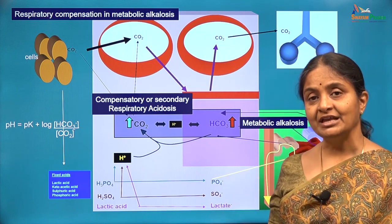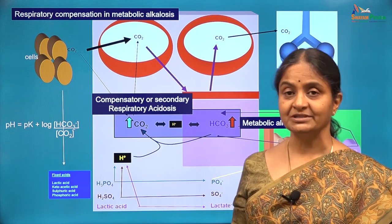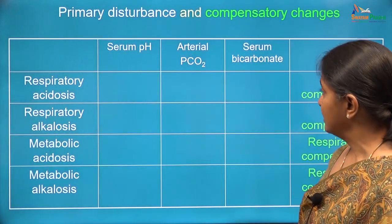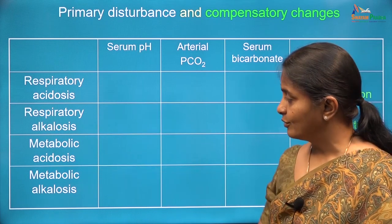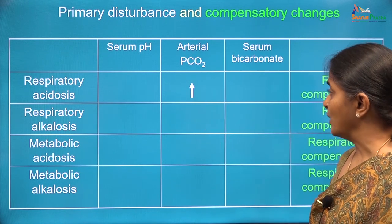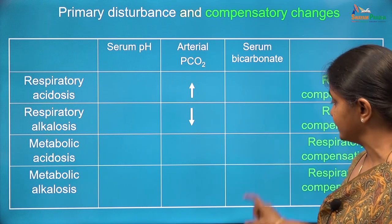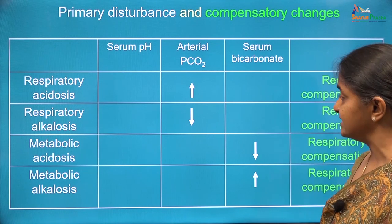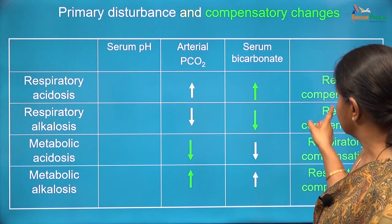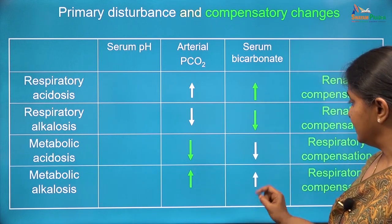We have now seen four major classes of pH disorders and compensatory mechanisms thereof: the lungs compensating for metabolic conditions and the kidneys compensating for respiratory conditions. These are the four classes of pH disorders we will discuss in subsequent lectures. The primary disturbances are shown in white arrows. In respiratory acidosis it is an increase in carbon dioxide; in respiratory alkalosis it is a decrease in carbon dioxide. In metabolic acidosis and alkalosis, the change is in serum bicarbonate. The compensatory mechanisms are shown in green arrows — renal compensation in respiratory conditions and respiratory compensation in metabolic conditions.